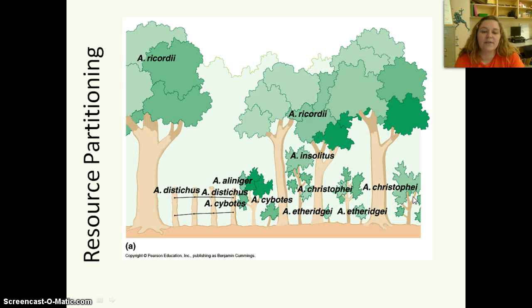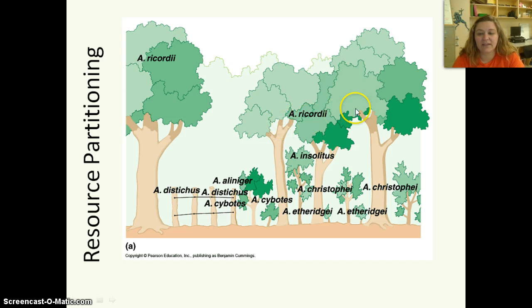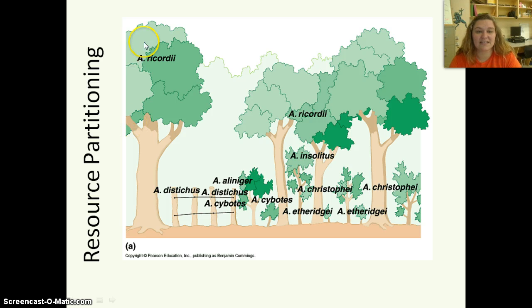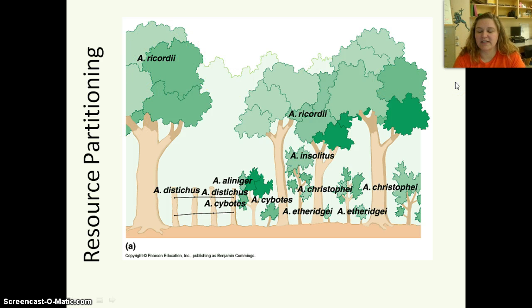In resource partitioning, the organisms are going to share the resources. Notice we have these really big trees, but then also smaller trees. The reason they're smaller is because the bigger trees are being allotted a lot more nutrients.